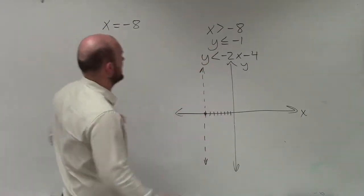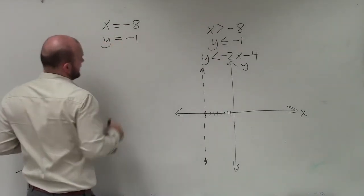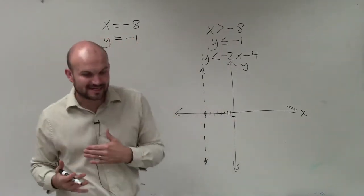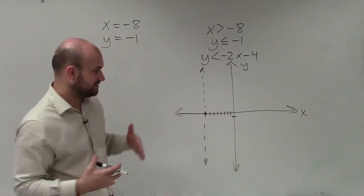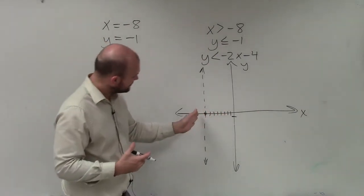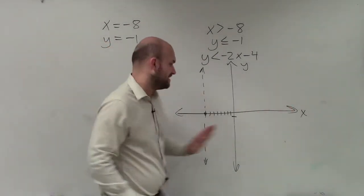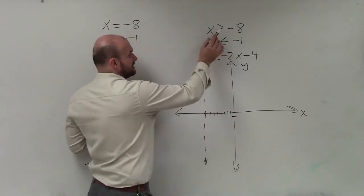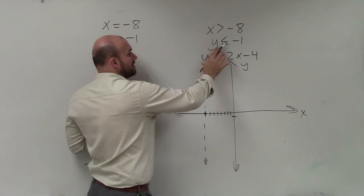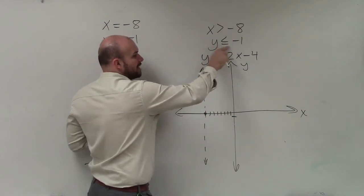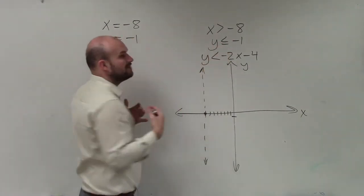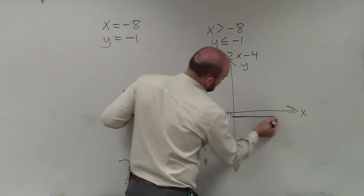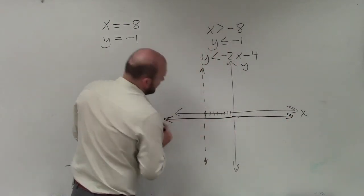Then I go over to y is less than or equal to negative 1. And again, now I go on the y-axis and I go down to negative 1. And just like my reasoning with x equals something, when y equals something, it doesn't matter what x equals. y is always equal to negative 1. So therefore, I'm going to draw a line. However, unlike this inequality, here I have less than or equal to. That or equal to tells you that your boundary line is going to be a part of your solution. So that's going to be a solid line.